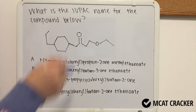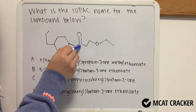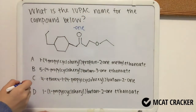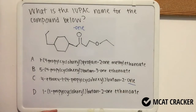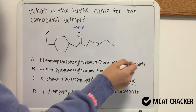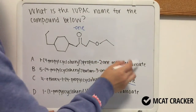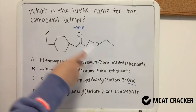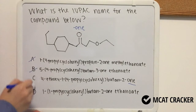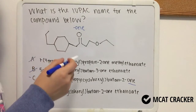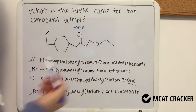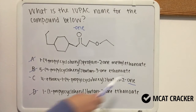Ketone has the highest priority here. We know that our suffix will be '-one' (O-N-E), which we see in answer choice C. In A, B, and D we see '-oate' (O-A-T-E) as the suffix. This is actually indicative of a carboxylic acid derivative, but we don't see anything like that in our structure. So I can already cross out A, B, and D, knowing that C is the correct answer just by recognizing that ketone has the highest priority and only answer choice C has the correct suffix.